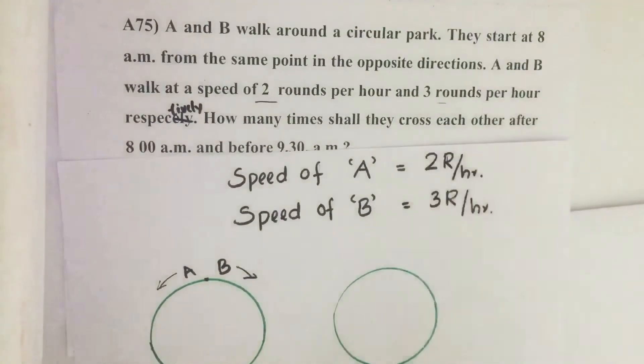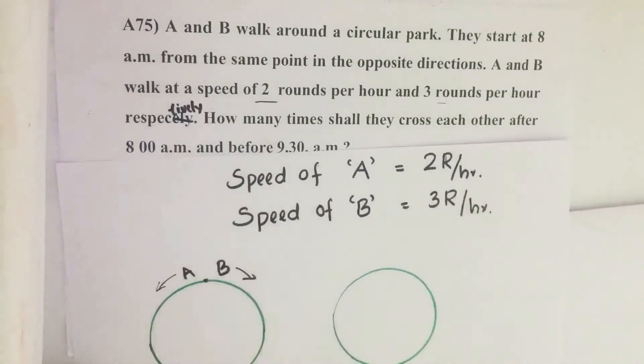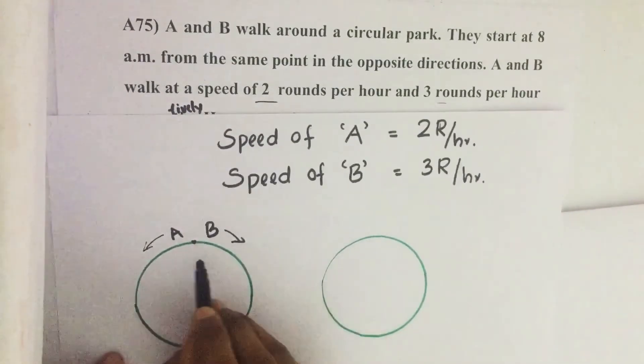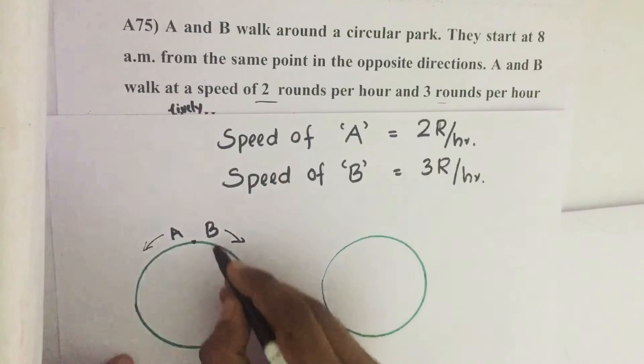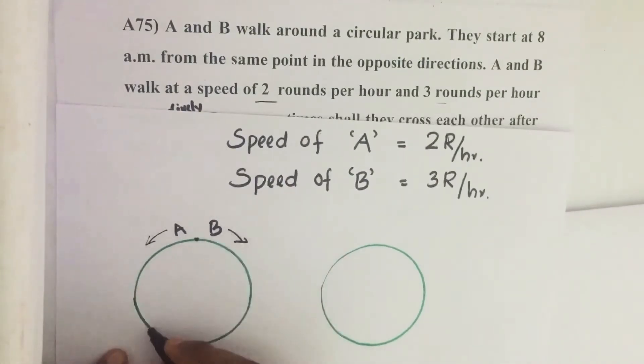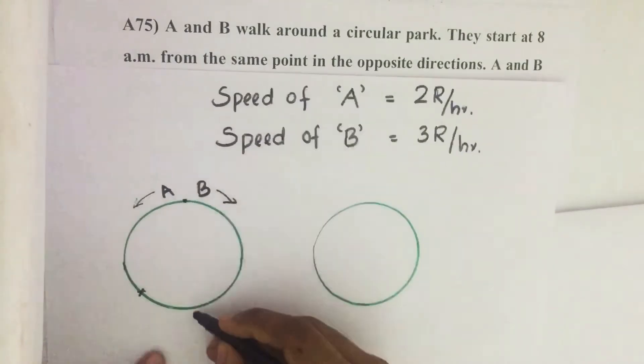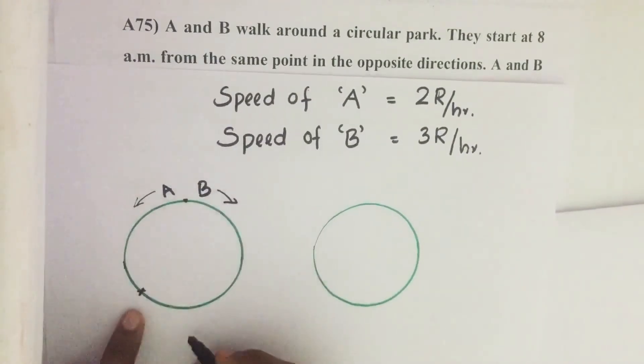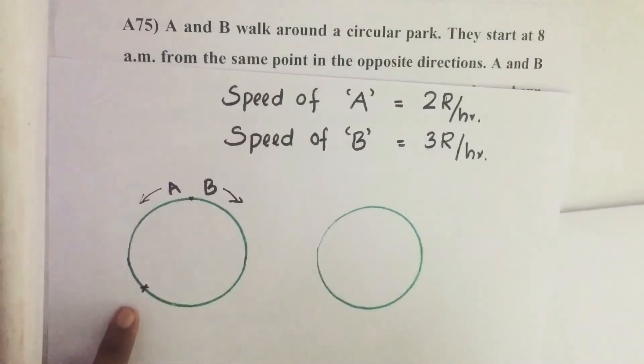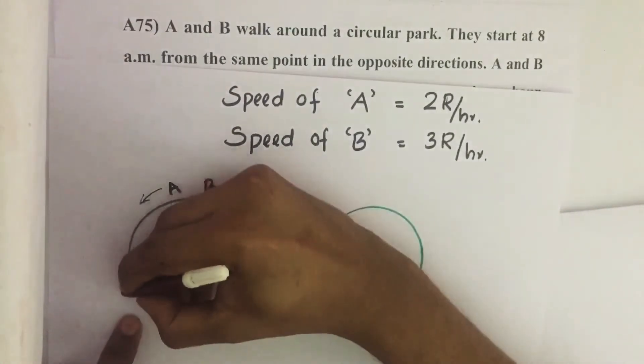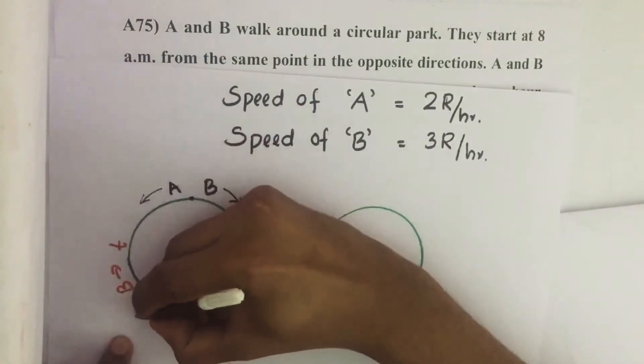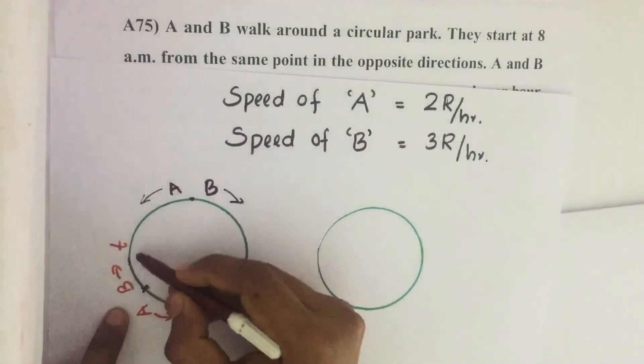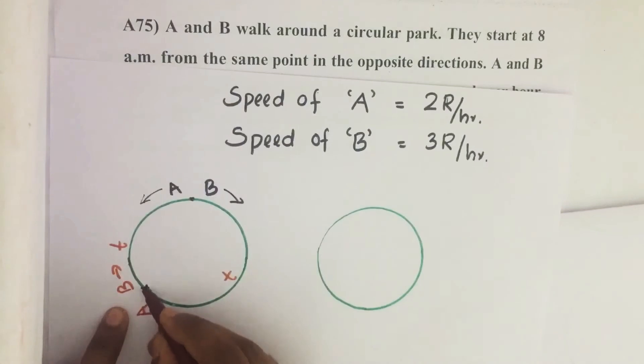So this R means distance travelled to complete one circle. Then speed of B is more than that of speed of A. That means they will meet each other somewhere around here because B walks more distance than A. Then they will meet at this point after some T time. After travelling T time they will meet each other here.